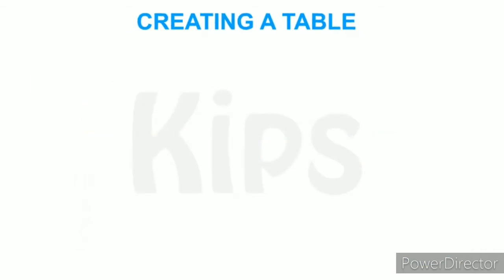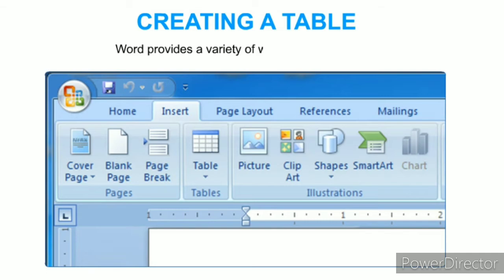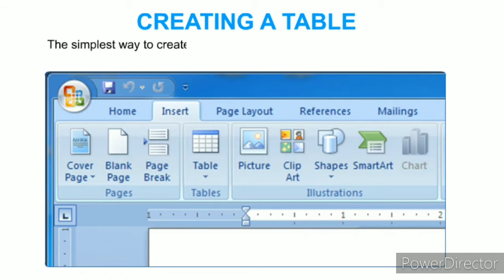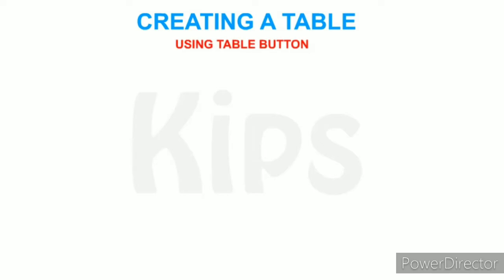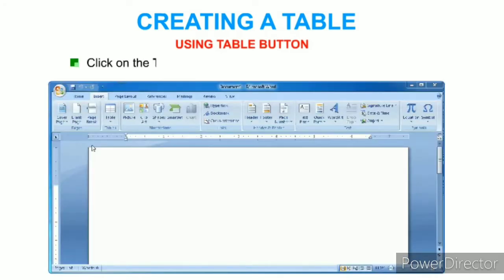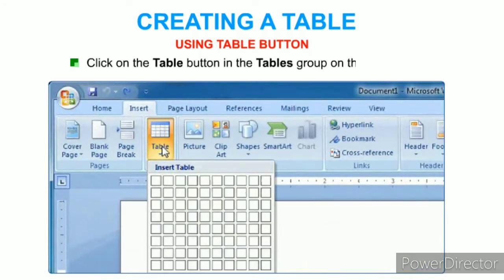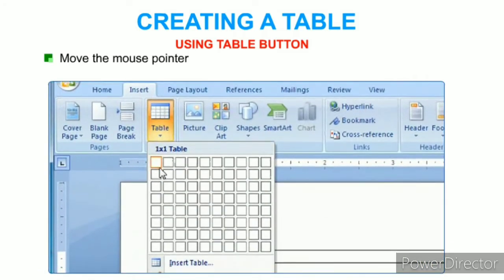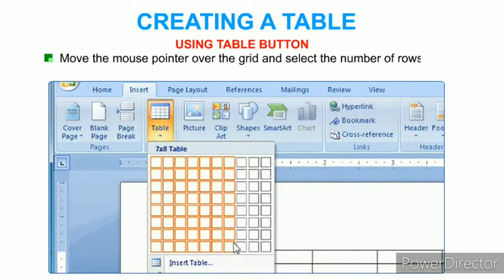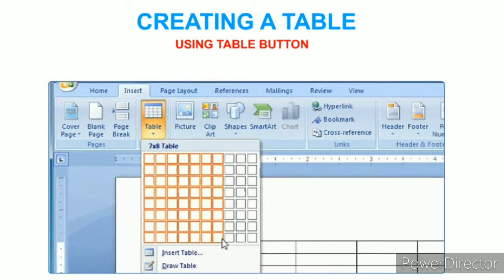MS Word provides a variety of ways to create a table. The simplest way is to click on the Table button in the Tables group on the Insert tab. Move the mouse pointer over the grid and select the number of rows and columns you want in the table.